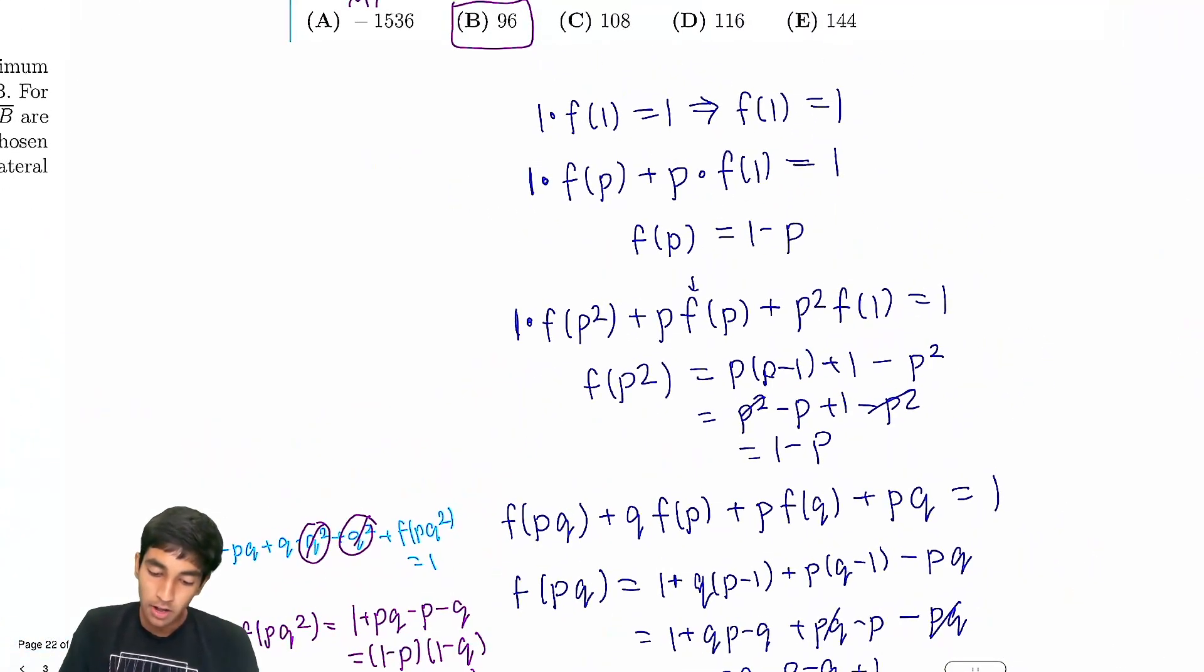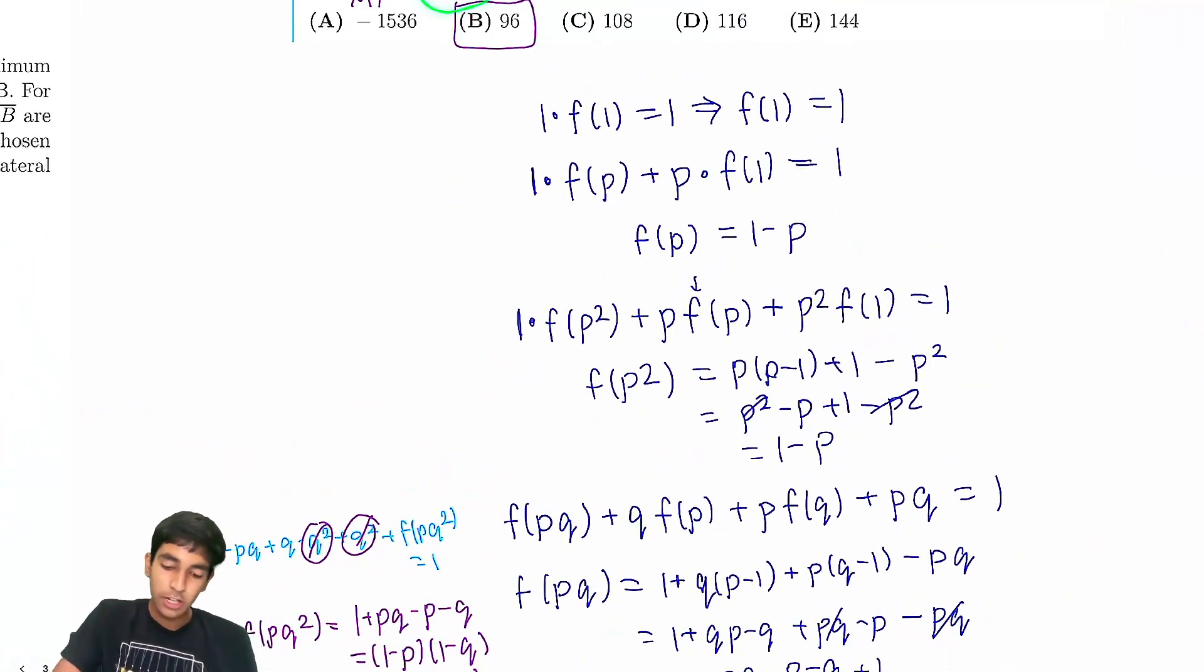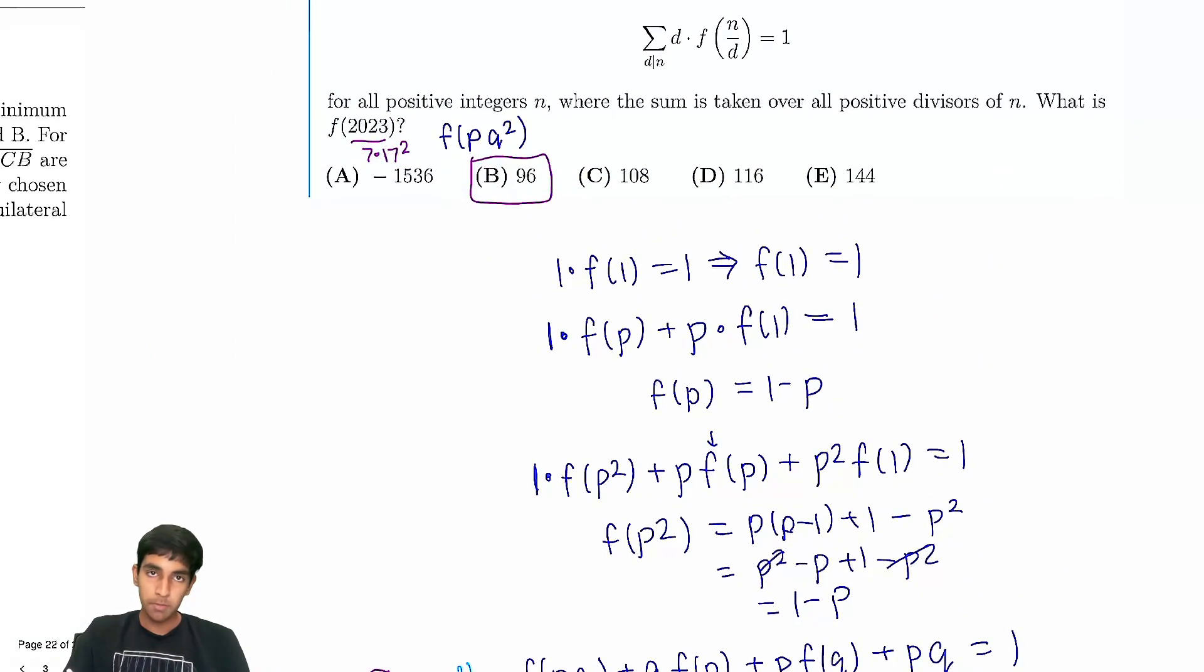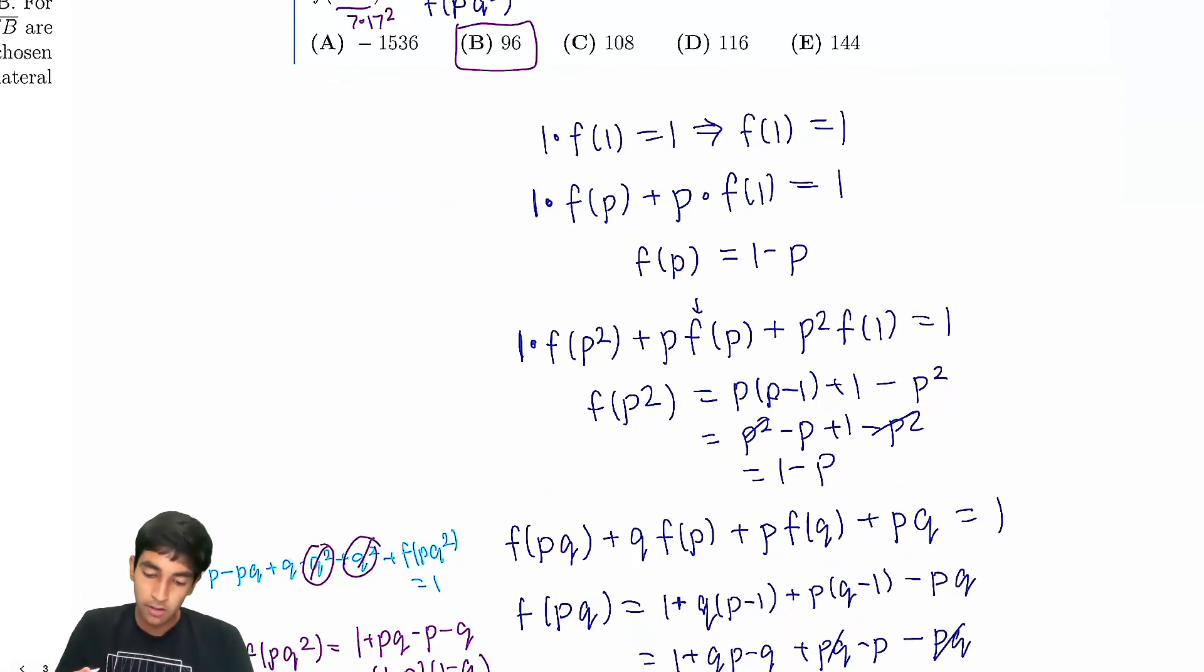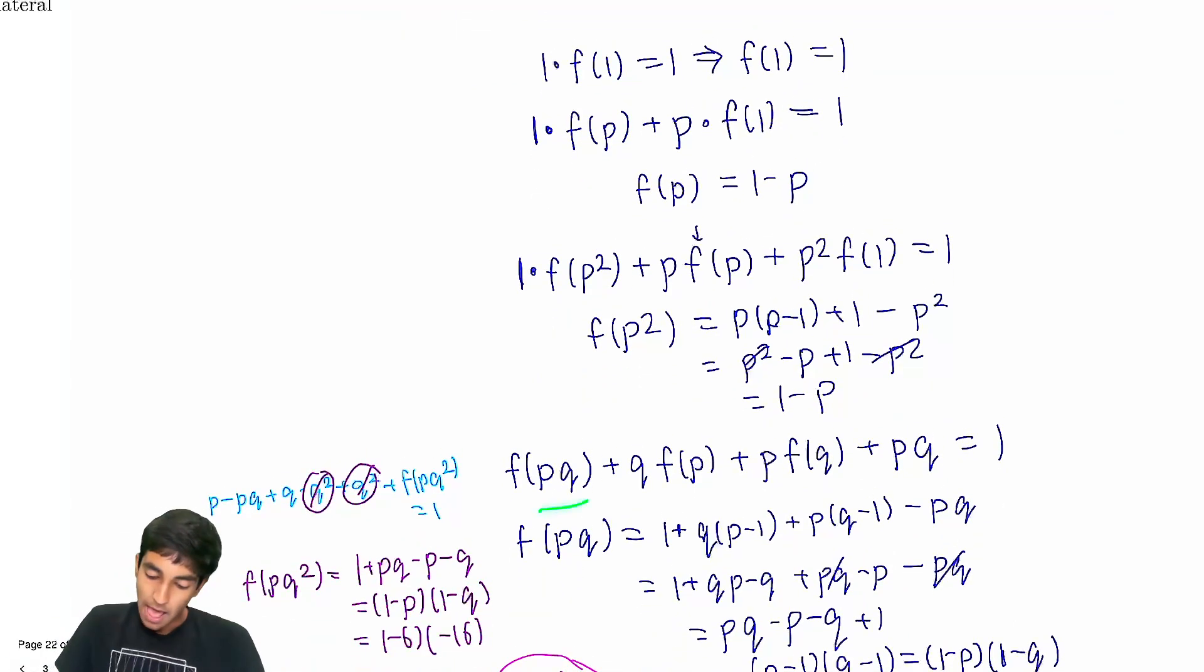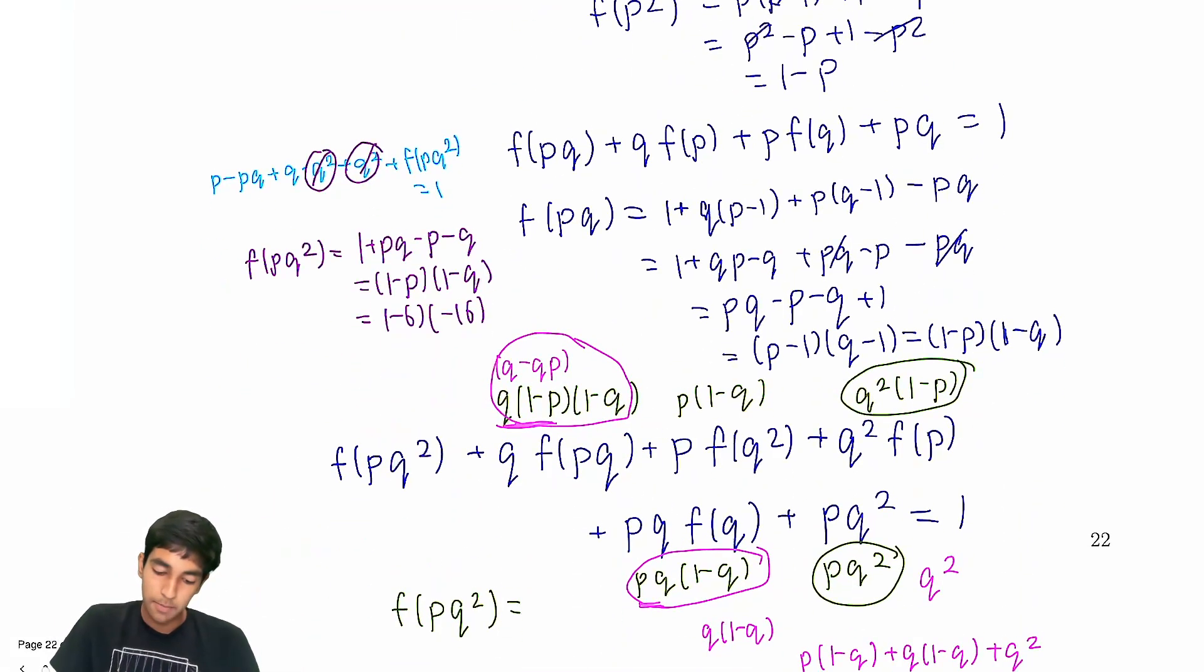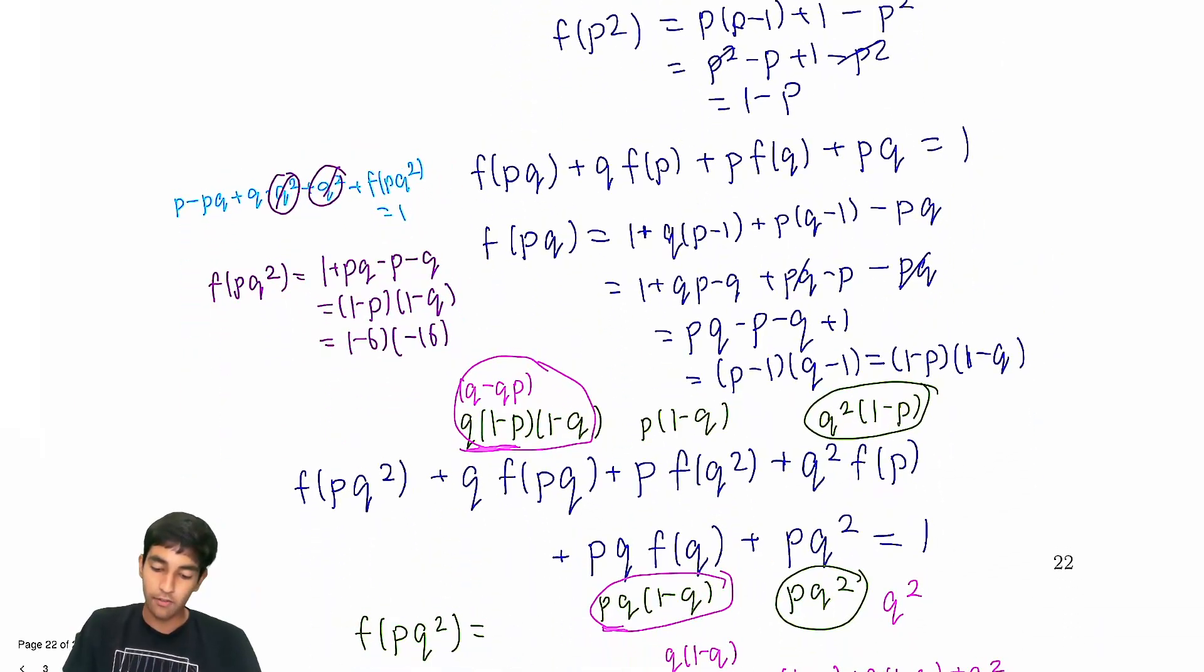The key idea here, you want to see that, okay, there's no need to work directly with 7 and 17. That's just going to be a hassle. We deal with p and q. We find f(pq²). And then to do that, we realize, okay, let's just start with 1, work our way up to primes, then primes times primes, and then prime squared, and then finally, we can work our way up to pq², which is what we're looking for.